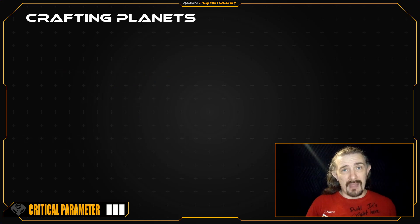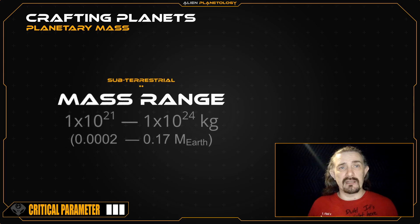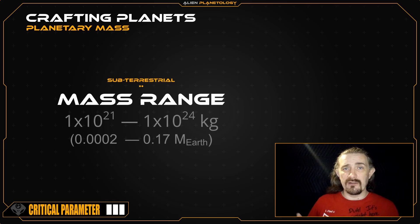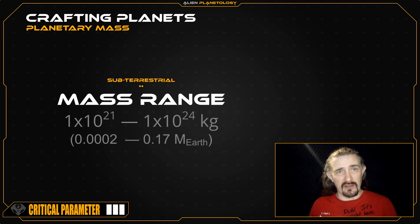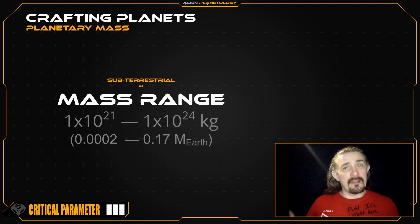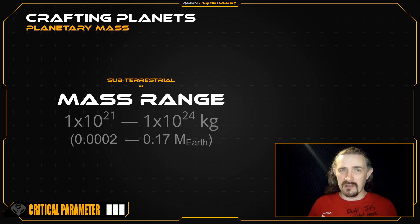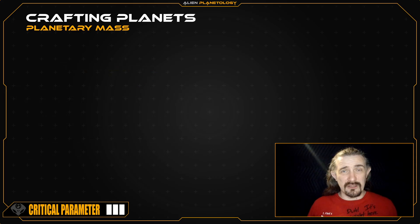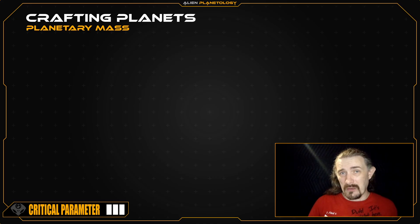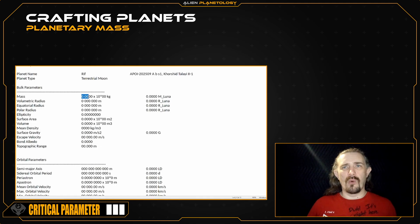Let's start off by defining our planet's mass. Subterrestrial planets range in mass from about 1×10²¹ to 1×10²⁴ kilograms, or roughly 0.002 to 0.17 Earth masses. If you're crafting a planet, then you can choose any mass within this range. But if you're crafting the major moon of a terrestrial planet or an asteroid belt dwarf planet, then you will likely want to choose a mass in the middle to low part of this range. I'm going to be making this into the rocky major moon for my Earth-like terrestrial planet, so I'm going to place its mass in the lower part of this range and set it to be 3.0552×10²² kilograms.